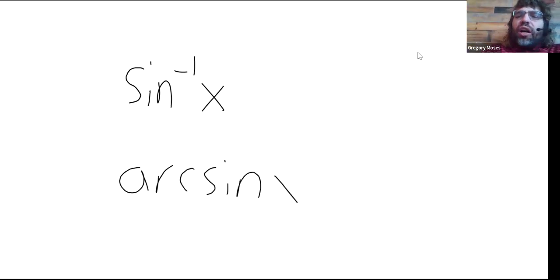So, how do we write down these inverses? Well, there are two ways. Let's use the sine for our example. We can write sin, the abbreviation for the sine, with a negative one up here. Or, we can call it the arc sine of x.